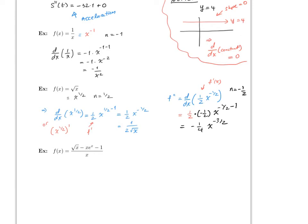This is technically correct, but the answer in the back of the book will most likely look like this: minus 1/4 times 1 over x to the 3/2, which simplifies to minus 1 over 4 times the square root of x cubed. Depending on how the question is asked, this form is often good enough, but both are exactly the same thing.